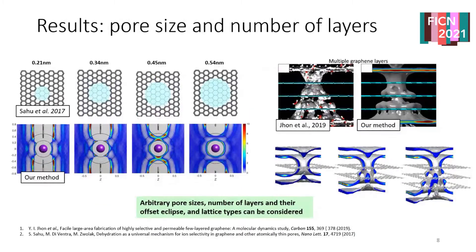We can also capture different pore sizes. On the top you see different pore sizes in graphene, and on the bottom these are patterns described by our method. We also extend the description to take into account more layers of graphene. On the left is a picture from a paper published in 2019, where the authors studied the transport of water through a thick layer of carbon, and on the right we see a similar picture obtained by our method — showing this complex structure of clusters and fingers of a sort of flipped crown.